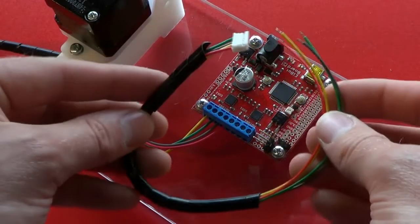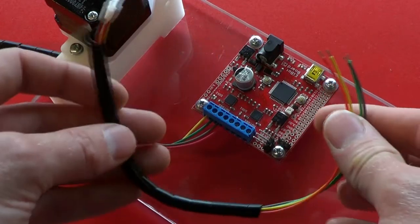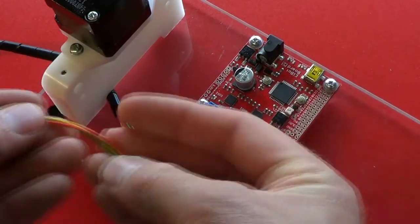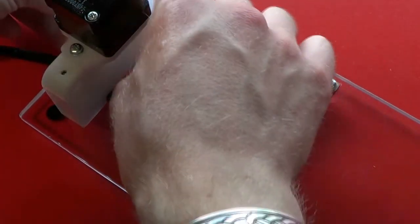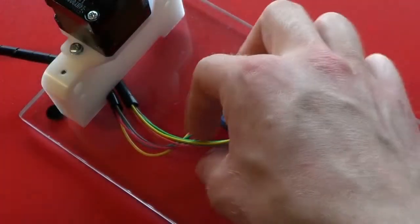Now we're going to do the X motor cable, which is the shorter of the two. So again, pass the wires through underneath the left-hand X support block and bring through some of the spiral wrap.